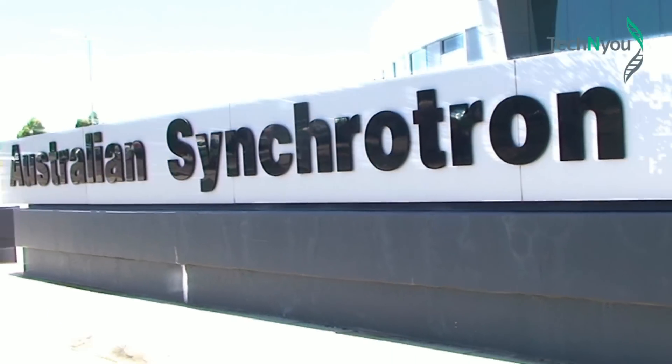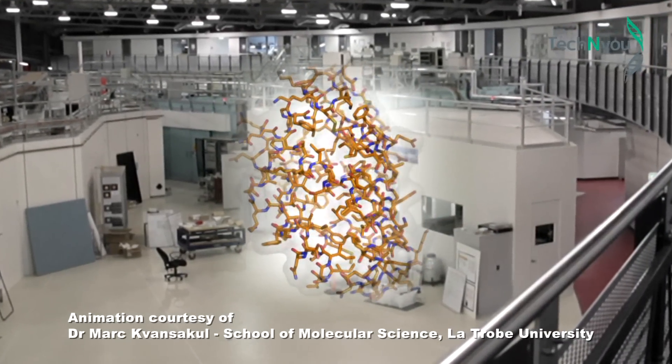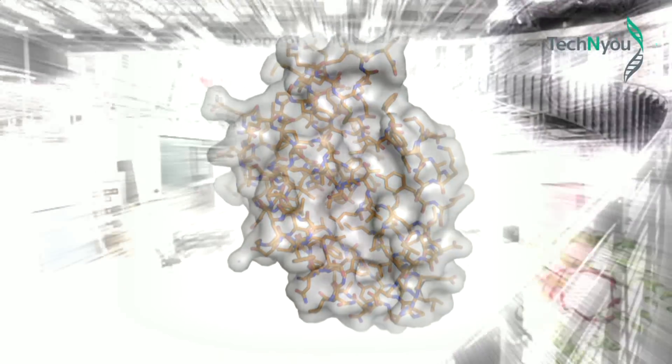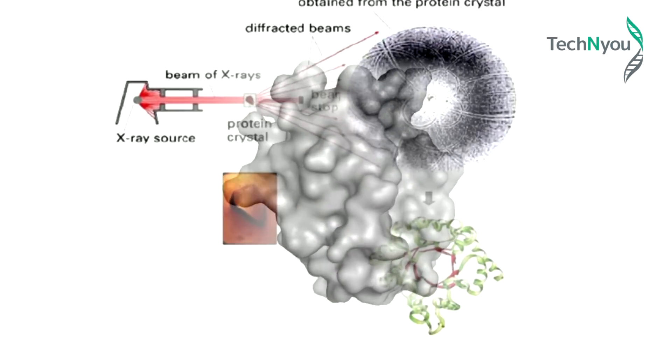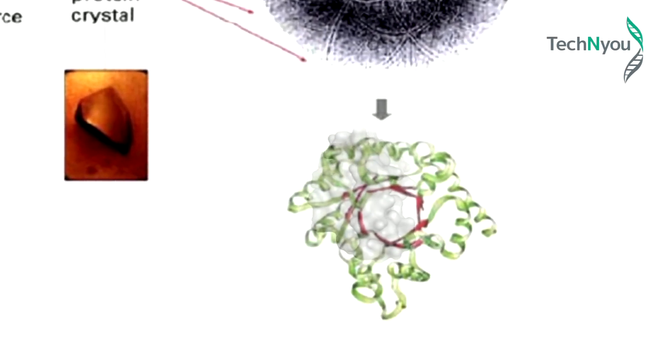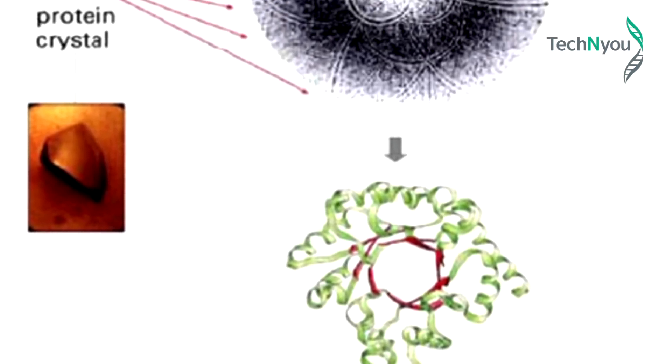Scientists use many sophisticated instruments to measure the dimensions of objects that are too small to see. But one of their simplest tools are X-rays. Because X-rays have wavelengths similar to the width of single atoms in a protein molecule, they can be used to illuminate the protein and generate a diffraction pattern.